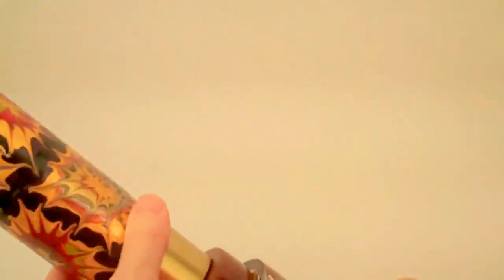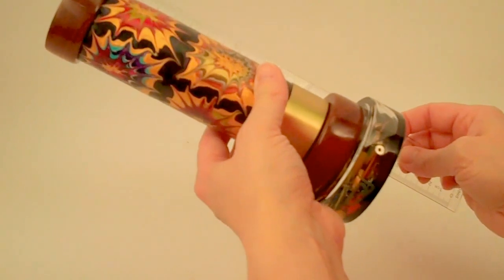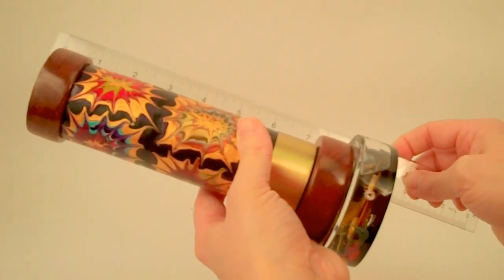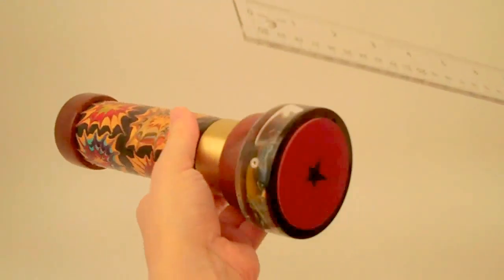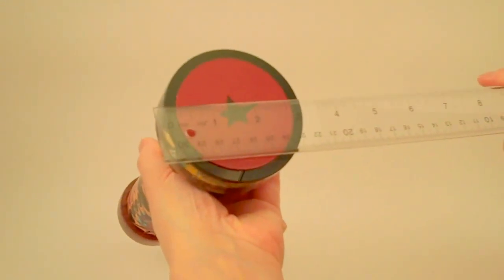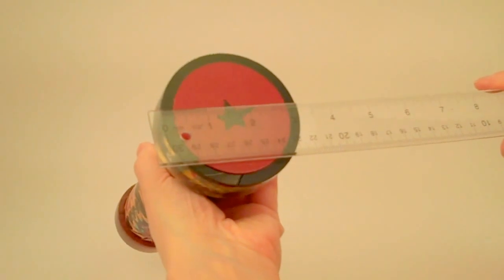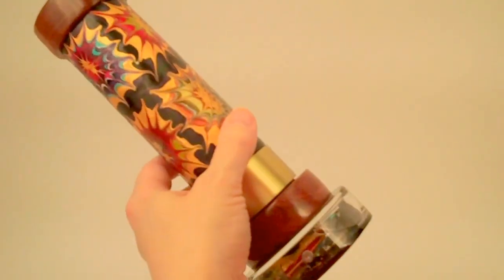The dimensions of the kaleidoscope - this is over 9 inches in height. It has a 2 1/4 inch diameter at the eyepiece, and almost a 3 1/4 inch diameter at the object chamber.